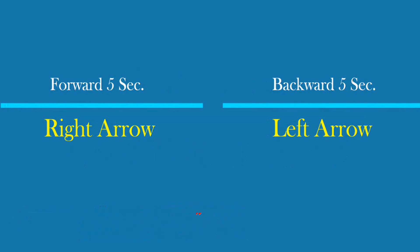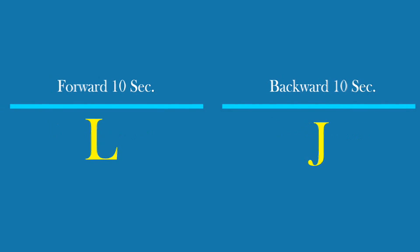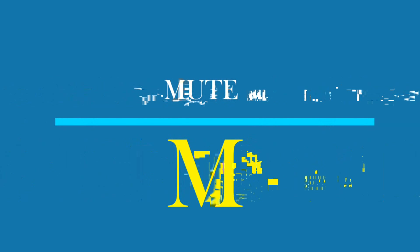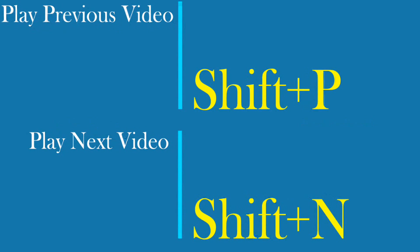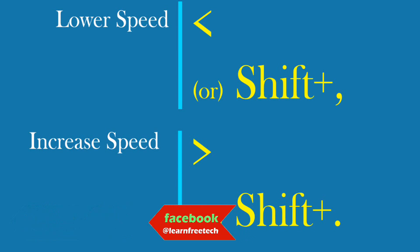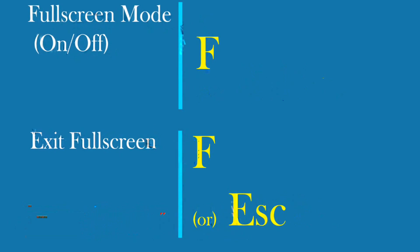Forward 5 seconds: keyboard right arrow. Backward 5 seconds: keyboard left arrow. Forward 10 seconds: L. Backward 10 seconds: J. Mute: M. Previous video: Shift+P. Next video: Shift+N. Video speed less than: decrease speed. Video speed greater than: increase speed. Full screen on/off: F. Full screen exit: Escape.